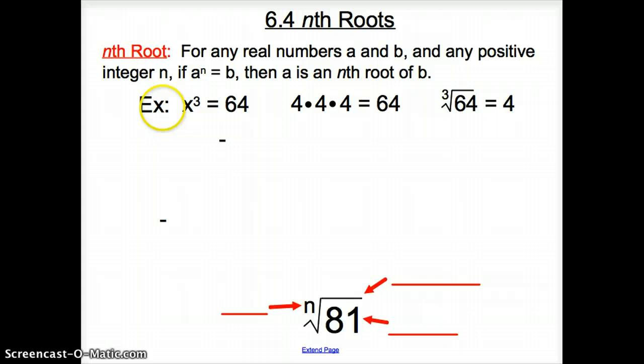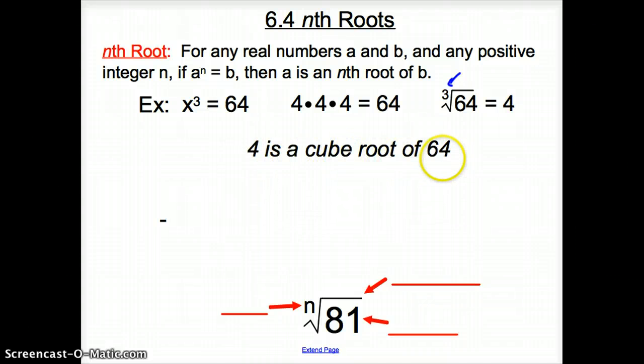It explains it better in this example. Think of x to the third as 64. What times itself 3 times is 64? Well, 4 times 4 times 4 is 64. Now, if we take the third root of 64, that would be 4. So 4 is the cube root of 64.